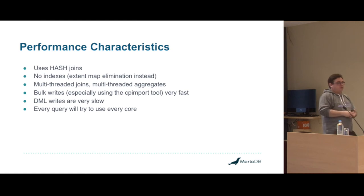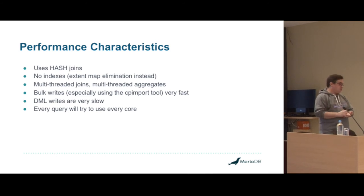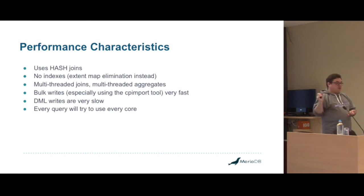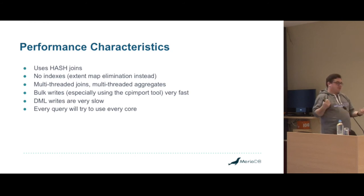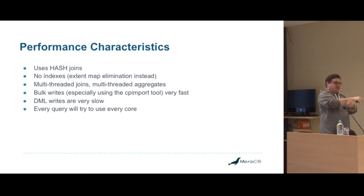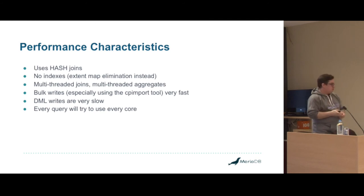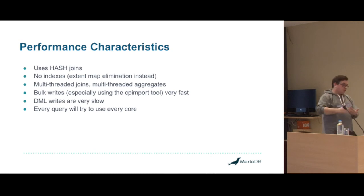For bulk writes, we have tools like cpimport which takes CSV. We have load data infile, insert select — all of that is very fast. DML writes in ColumnStore are very slow at the moment. We use a concept of an undo log, which means that every time you change a column, we have to copy the old block into your undo log, sync it, write the new data into the new column, and sync it. This can be an extremely slow process.